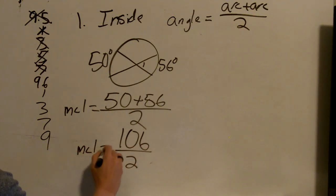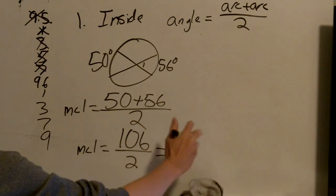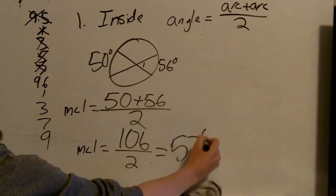So 50 plus 56 is 106. So the measure of angle 1 equals 106 divided by 2, which is 53 degrees.